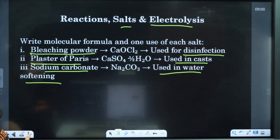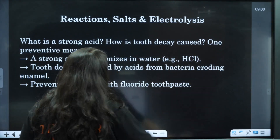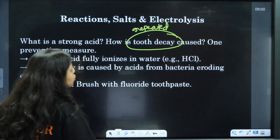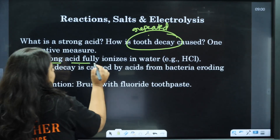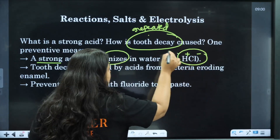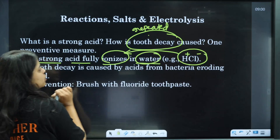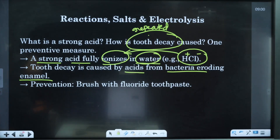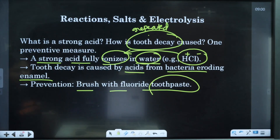Next, what is a strong acid? A strong acid is one that fully ionizes in water — for example, HCl ionizes completely into H⁺ and Cl⁻ in water. How is tooth decay caused? It is caused by acid from bacteria eroding the enamel. Prevention: brush with fluoride toothpaste.